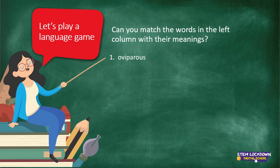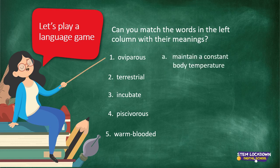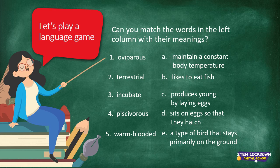The words to match are: oviparous — do you remember that word? Terrestrial — what does that mean? Incubate — what is meant by incubate? Piscivorous — what does that mean? And warm-blooded. Now let's read the meanings: A — to maintain a constant body temperature; B — likes to eat fish; C — produces young by laying eggs; D — sits on eggs so that they hatch; E — a type of bird that stays primarily on the ground. Can you match the words? Just write down the numbers and the letters.